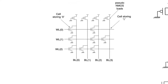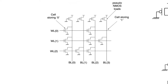Here we can see a very small NOR ROM array. Arrays consist of columns — each column is called a bit line — and rows, where each row is called a word line. We have word lines from 0 to 2 and bit lines from 0 to 3, giving us a 3 by 4 array containing 12 bits.